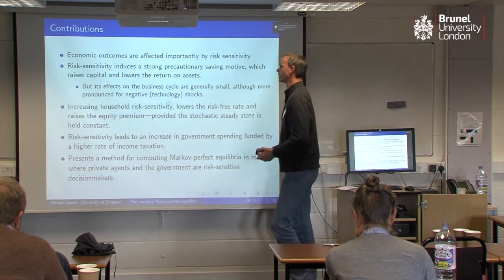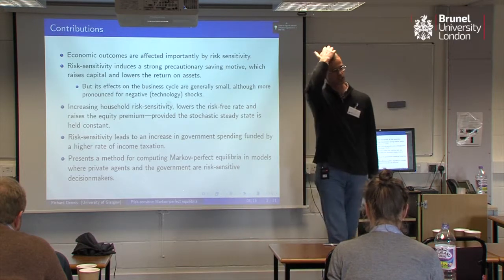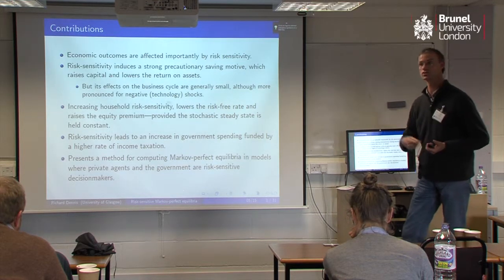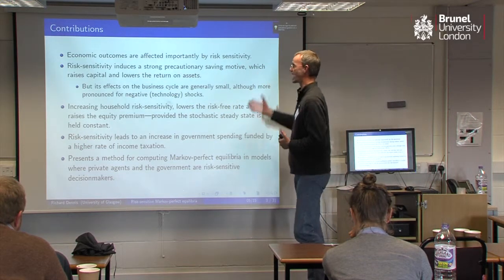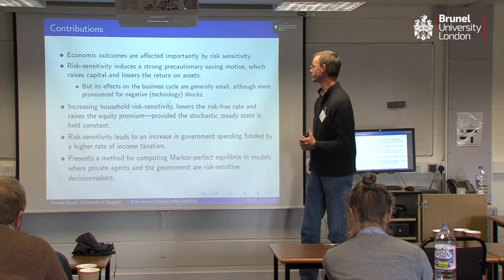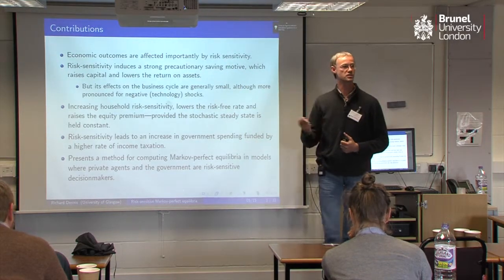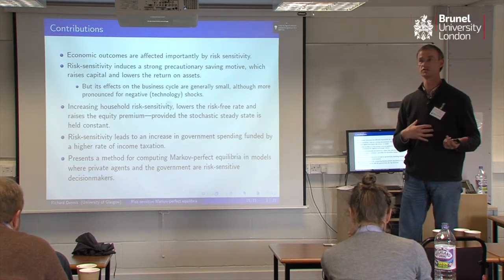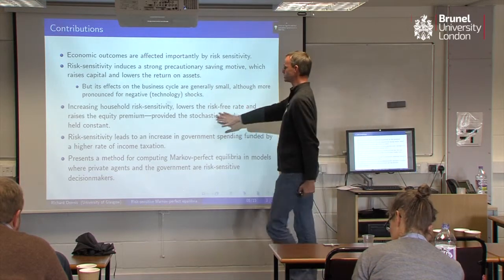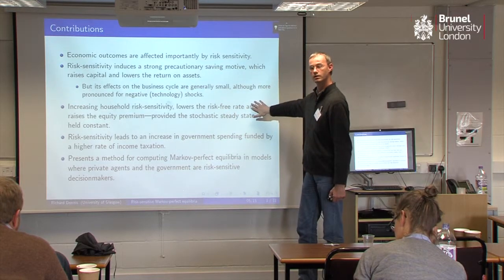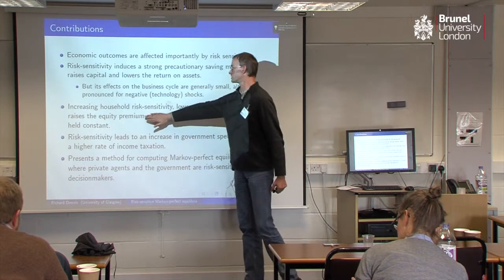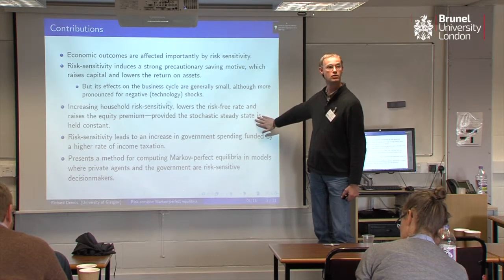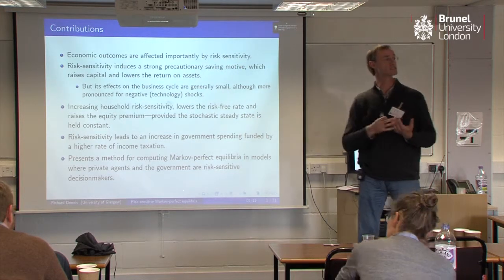So what I'm going to show you is that the economic outcomes are going to be affected importantly by risk-sensitivity. The risk-sensitivity is going to induce a really strong precautionary savings motive, so it's going to induce households to defer consumption and accumulate capital, and the accumulation of capital is going to affect the return on assets. But although it's doing that, we're going to find that the effects on the business cycle are pretty small — the way the economy responds to shocks is not that sensitive to whether agents are risk-sensitive decision makers or not. When I increase households' risk sensitivity, this lowers the risk-free rate, it lowers also the return on equity, but raises the equity premium — provided I'm keeping the stochastic steady state for capital constant. So I'm generating a type of mean-preserving spread in uncertainty, if you like.